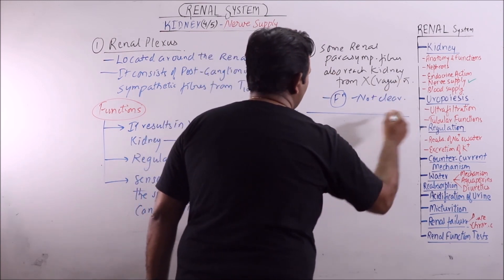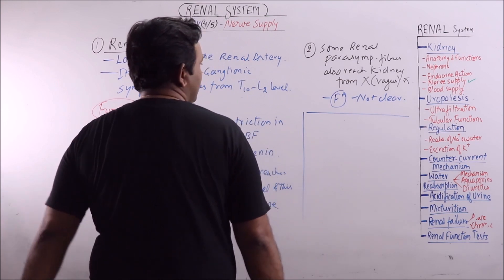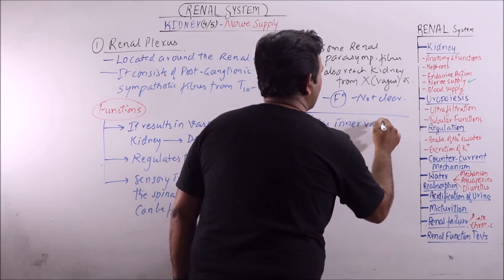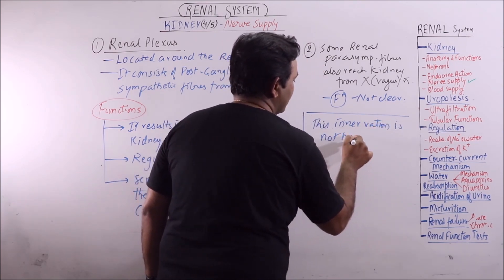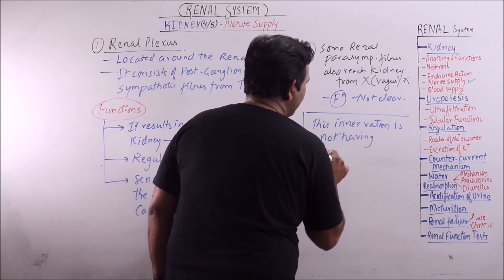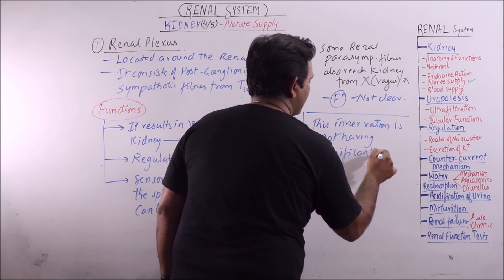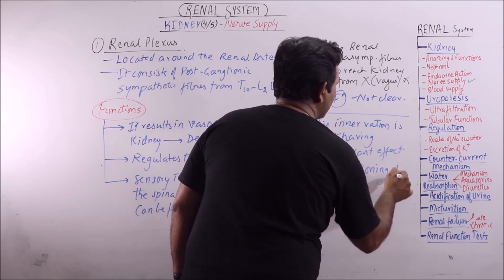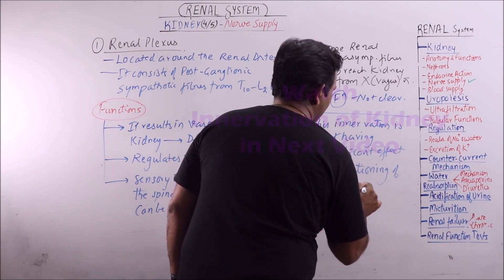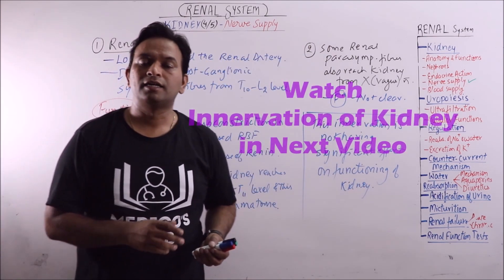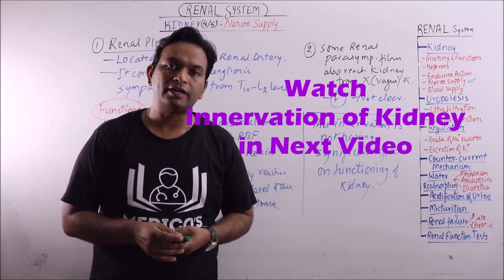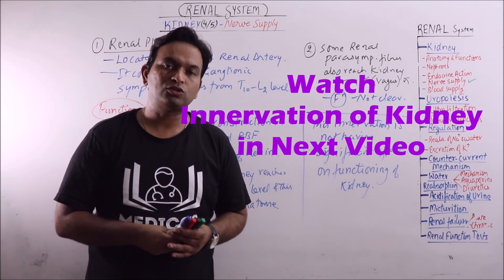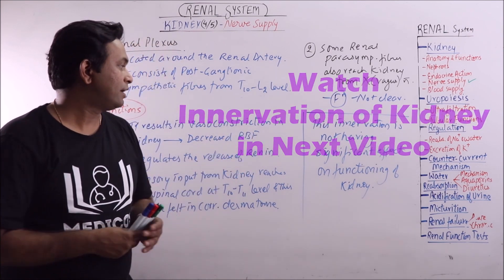It is very important to note that in spite of this innervation, it does not have a significant effect on the functioning of the kidney. Because when renal transplantation is done, there is complete resection of the innervation of the kidney, yet most of the functions are again resumed and retained. This is because these functions are controlled by hormones, and not by the nerve supply.